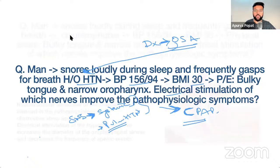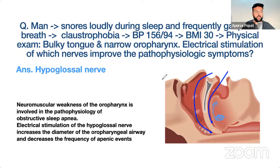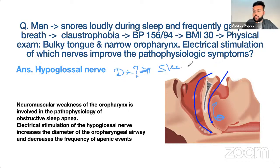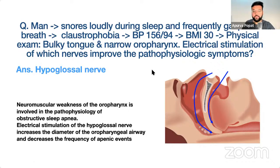Stimulating the hypoglossal nerve prevents falling back of the tongue in obstructive sleep apnea. To diagnose OSA, you perform sleep studies — also called polysomnography.